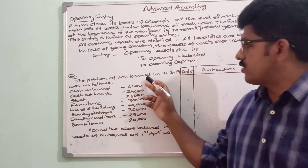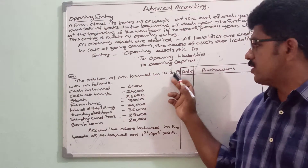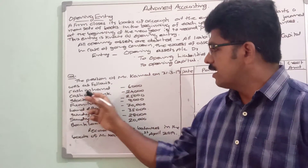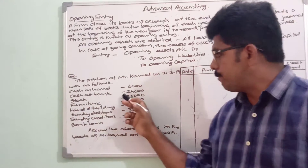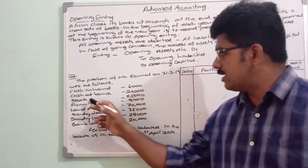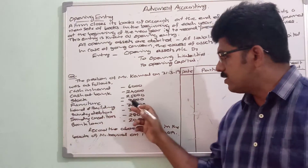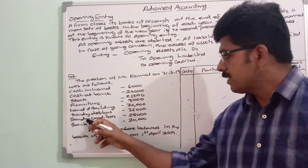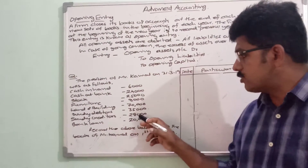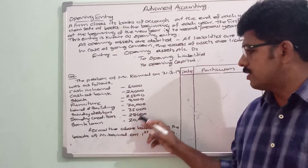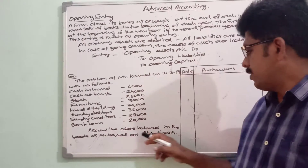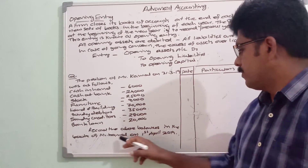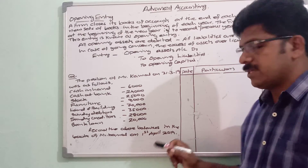The position of Mr. Kahul on 31st March 2019 is as follows: cash in hand 6,000; cash in bank 24,000; stock 25,000; furniture 8,000; land and building 70,000; sundry debtors 35,000; sundry creditors 28,000; and bank loan 20,000. Record the above balances in the books of Mr. Kahul on 1st April 2019.